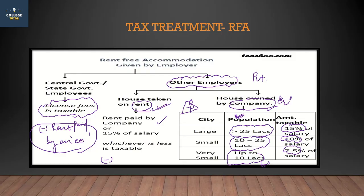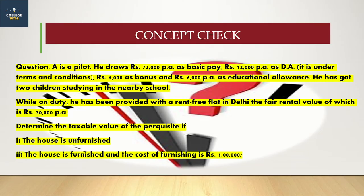So the company's taxable amount is actual rent paid or 15% of salary, whichever is less. Now here is a question — I request you to pause the video and try it yourself.